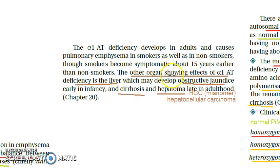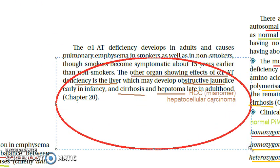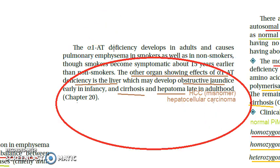A closing note: another organ affected by alpha-1 antitrypsin deficiency is the liver. It can cause obstructive jaundice, cirrhosis of the liver, and hepatoma — that is, hepatocellular carcinoma, which is a malignant liver tumor. This concludes the brief on pathogenesis. In the next video, we will cover the genetic pathogenesis.